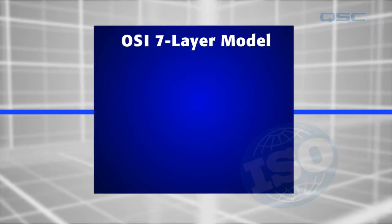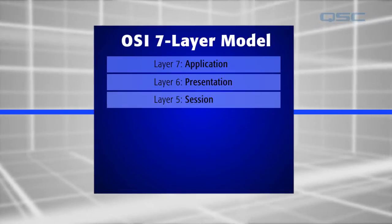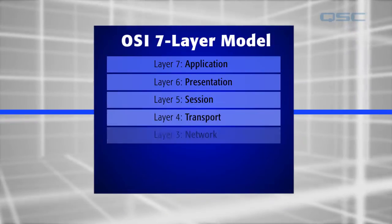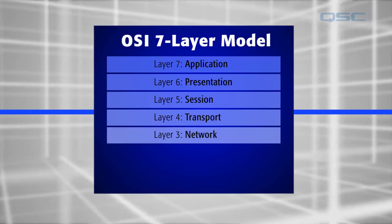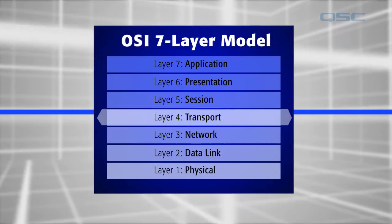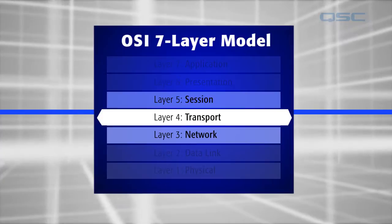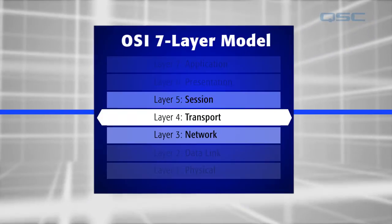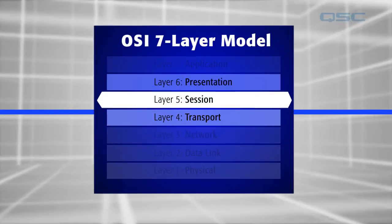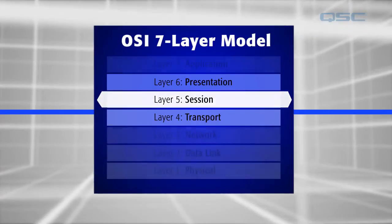These layers are: application, presentation, session, transport, network, data link, and physical. Each of these layers only communicates with the layer directly above or below it, so that as new technologies are developed, they can be implemented without having to overhaul the entire model.